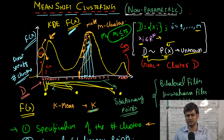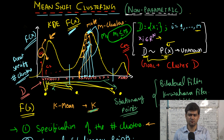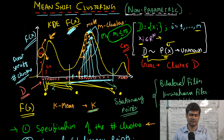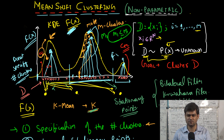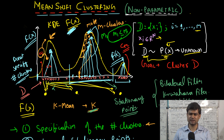As the algorithm progresses, each data point gives up its cluster identity and assumes the identity of the cluster associated with its attracting mode. If we follow the gradient or mean shift vector from each data point within a given region, they will all be attracted to the same stationary point — a mode of the kernel density estimator function. Similarly, points in another region are attracted to a different mode, and so on for each region in the data set.